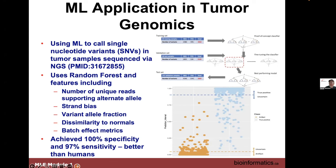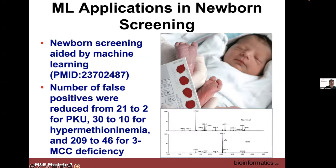Machine learning can also be applied to newborn screening, which is usually done by mass spectrometry — a heel prick blood spot analyzed for amino acids, organic acids, and acyl carnitines. Analysis is often done by hand and error-prone since hits are rare. Running it through a machine learning method can improve performance substantially.